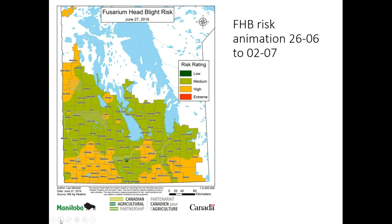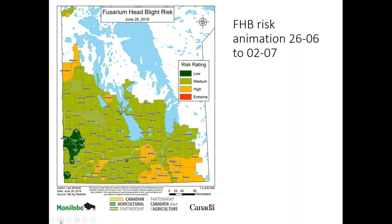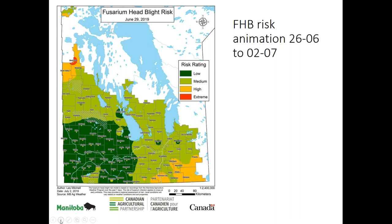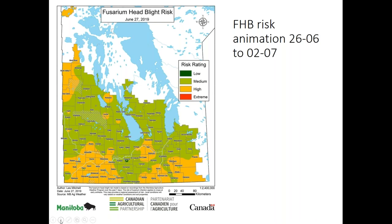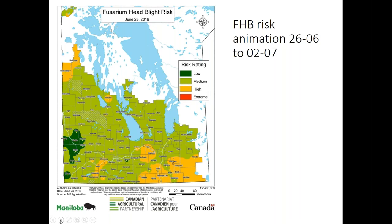The animation runs through June 26, 27, 28, 29, 30, through the weekend, July 1st Canada Day, and July 2nd. This gives you an idea of how dynamic this forecast is and how quickly it changes from day to day in response to hours of precipitation and hours where temperature for infection is in the ideal range at each of the yellow dots on the map.